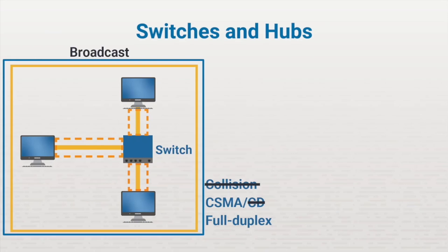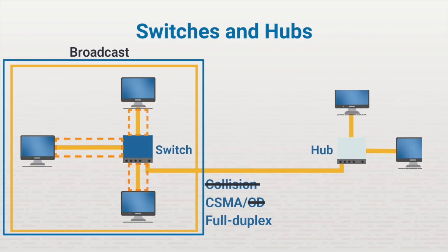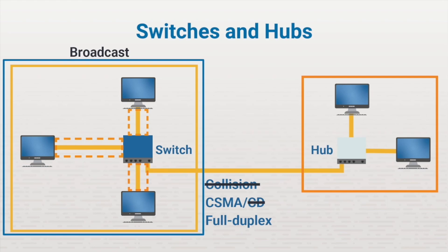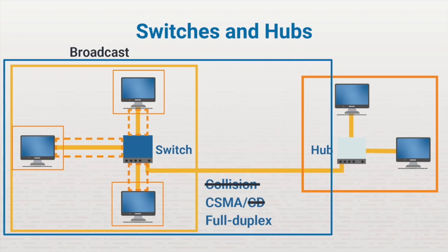Now let's introduce a little more complexity. Let's say we have a hub connected to a switch port instead of a computer, and this hub has multiple workstations connected to it. Remember that the collision domain is created by the switch port, so all devices connected to a given switch port are part of the same collision domain. In this case, these devices are in the same collision domain because they all share media with the other devices connected to the hub. Because these devices are on a shared medium, we need to enable collision detection, and only half-duplex communication is possible — not an optimal situation. But these devices over here still have their own collision domain because there's a single device connected to a single switch port. These other devices share a collision domain, and these devices are part of the same broadcast domain.